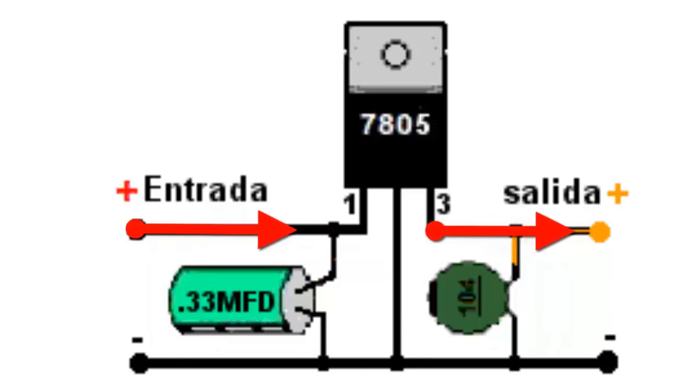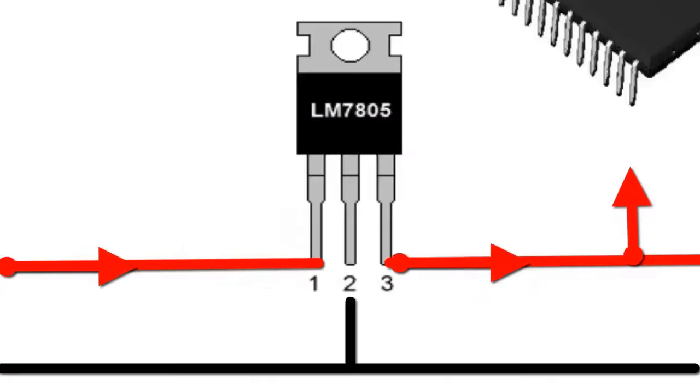Usually, the 7805 regulator is responsible for supplying the air conditioner sensors with a voltage of 5 volts in addition to powering electronic board controllers.